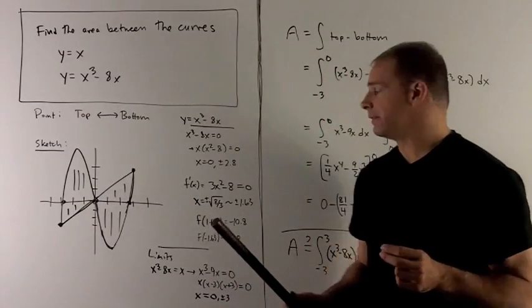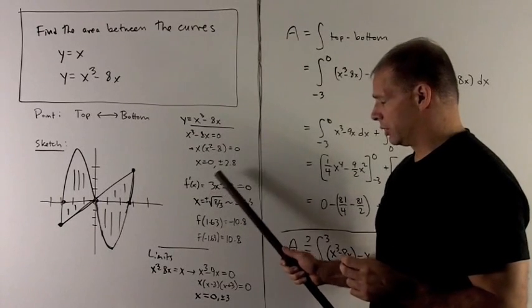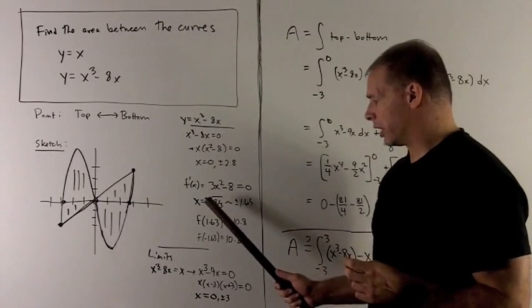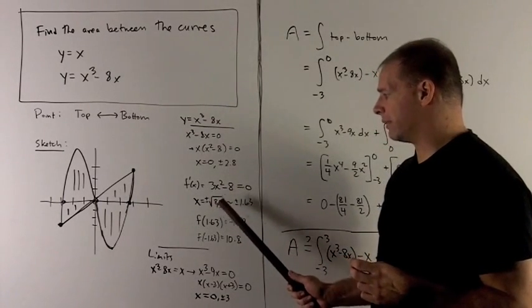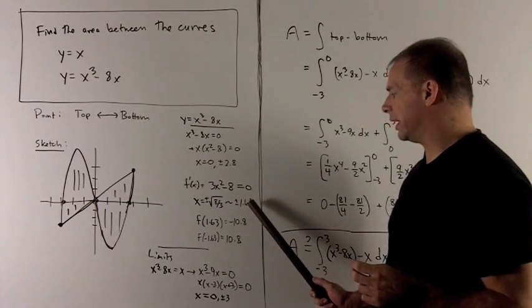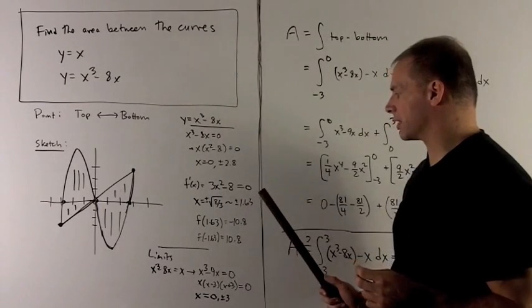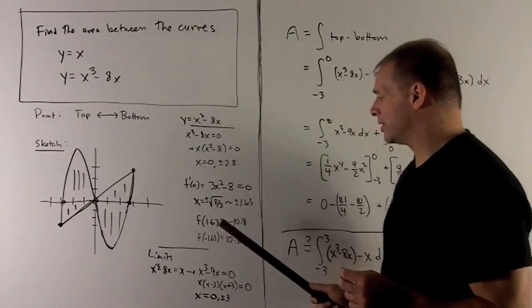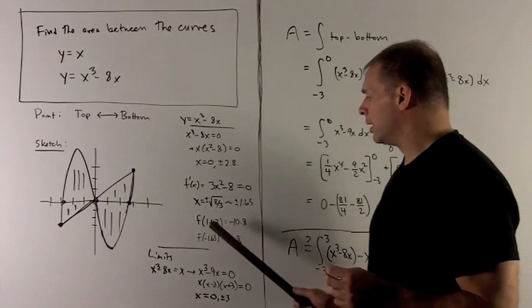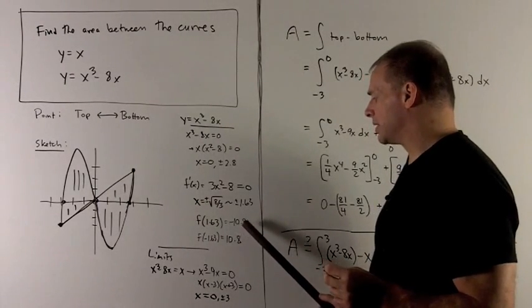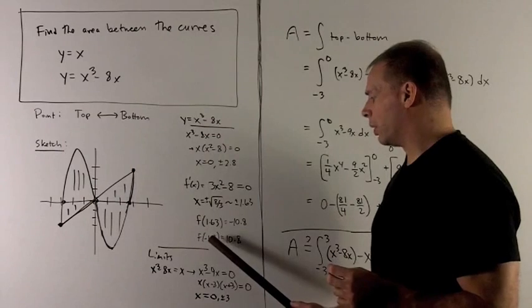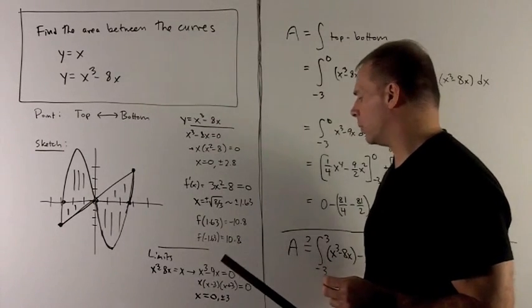Take the derivative. The roots of this quadratic are going to be plus minus square root of 8 over 3, which is roughly plus minus 1.63. I plug that into the original equation. I'm going to get, for 1.63, a minus 10.8, and minus 1.63 gives me 10.8.